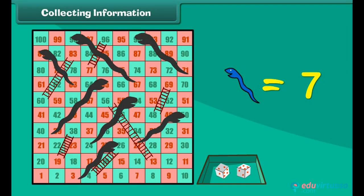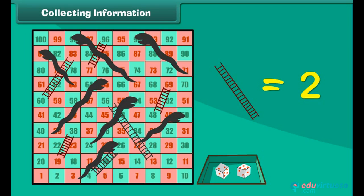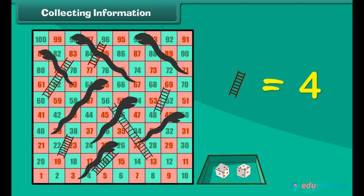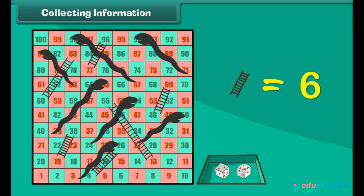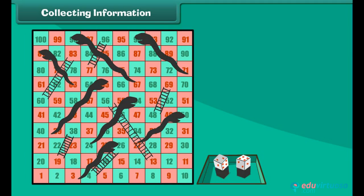Now we count the total number of ladders: 1, 2, 3, 4, 5 and 6. There are 6 ladders. How many dice do you see here? There are 2 dice.